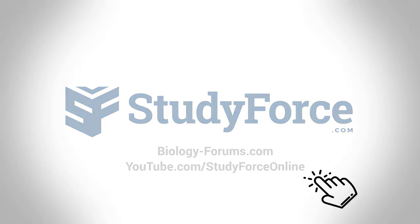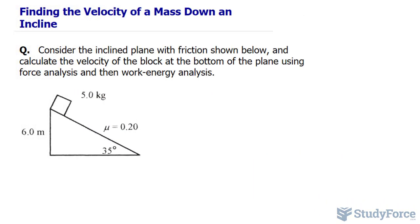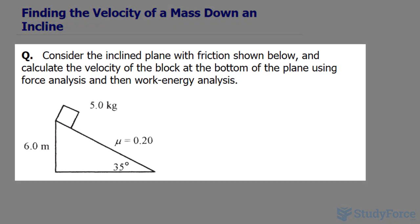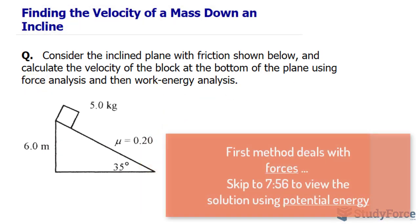In this lesson, I'll show you how to find the velocity of a mass down an incline. I'll show you two different solutions: one involving forces and kinematic equations, and the other involving potential energy. The question reads: consider the inclined plane with friction shown below, and calculate the velocity of the block at the bottom of the plane using force analysis and then work-energy analysis.